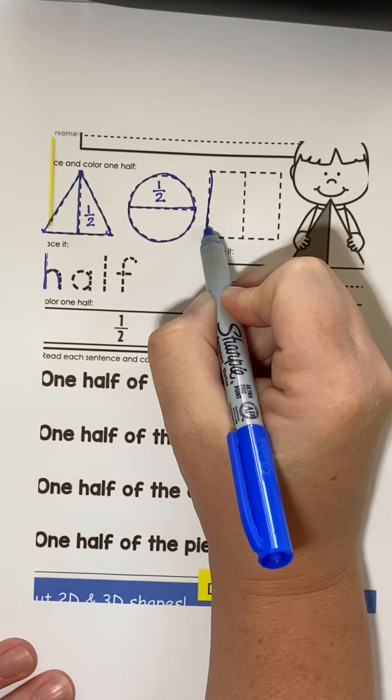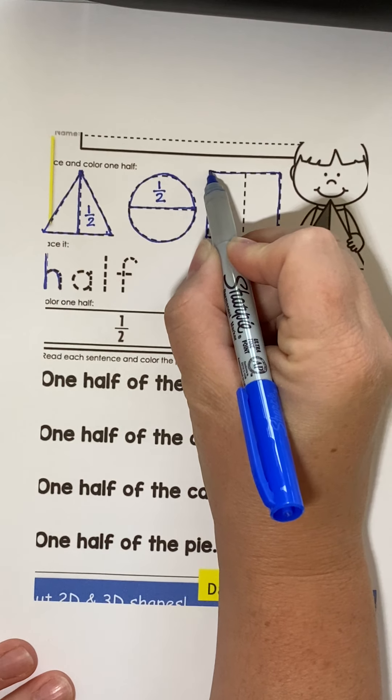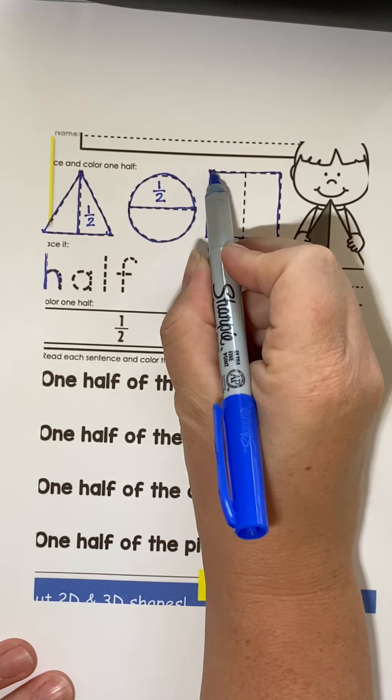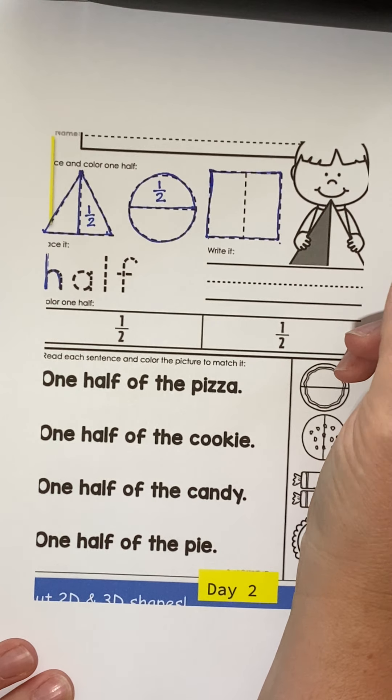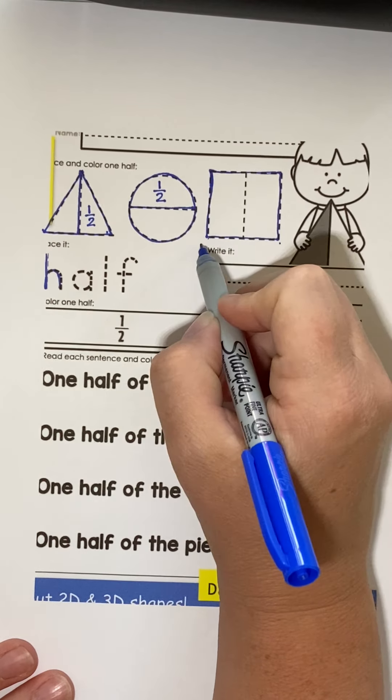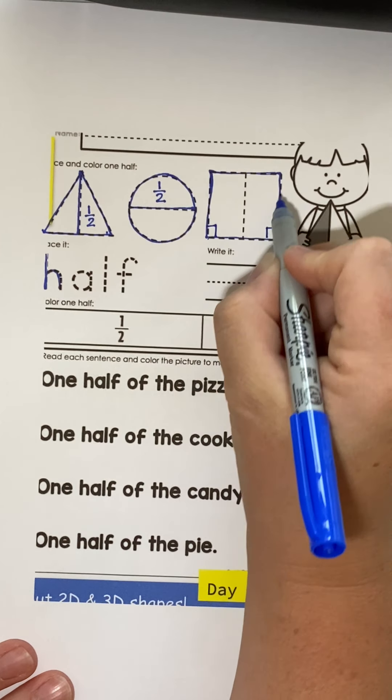To divide a square in half, first let's talk about the square. A square has one, two, three, four equal sides. They are all the same length. They have four square corners.